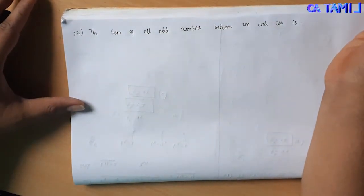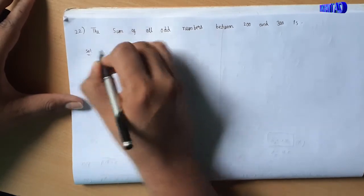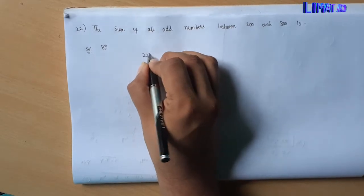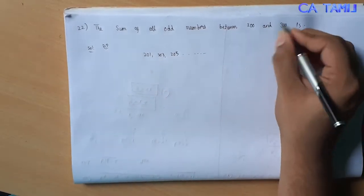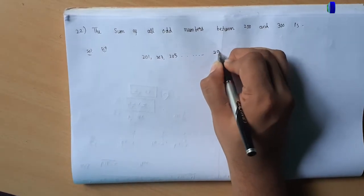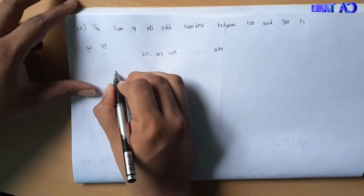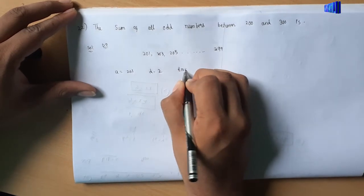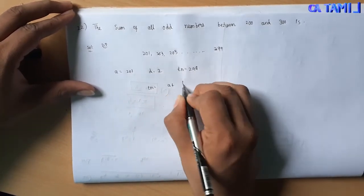The sum of all odd numbers between 200 and 300. These odd numbers are 201, 203, 205, and so on up to 299. This forms an AP where the first term a equals 201, common difference d equals 2, and the last term tn equals 299.